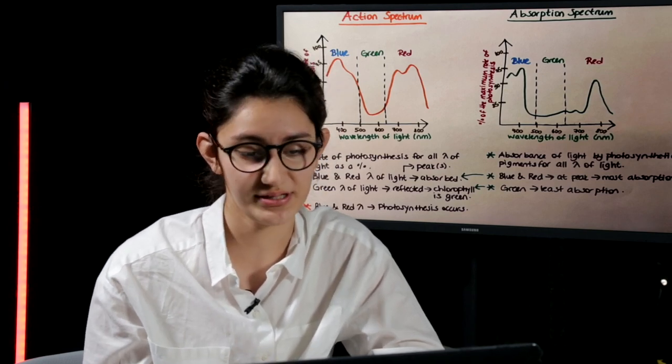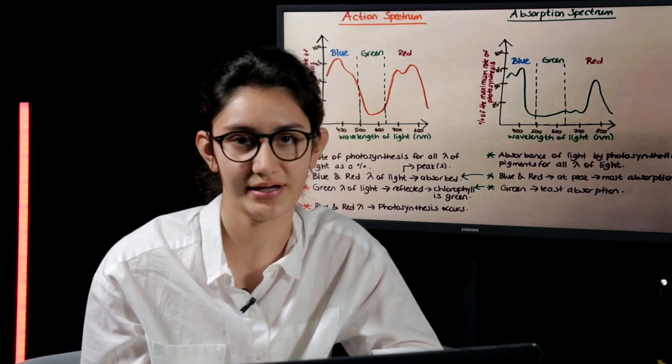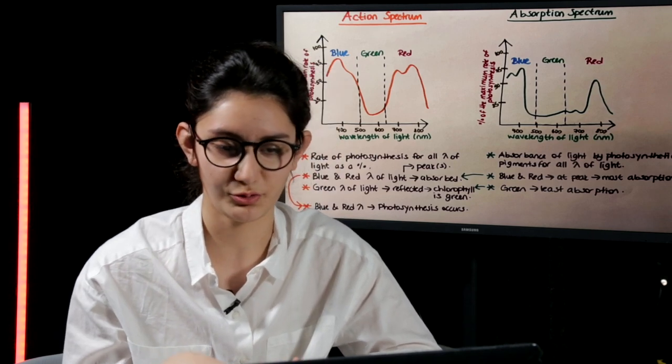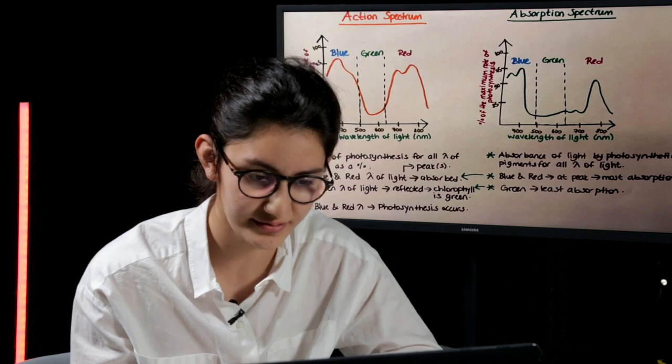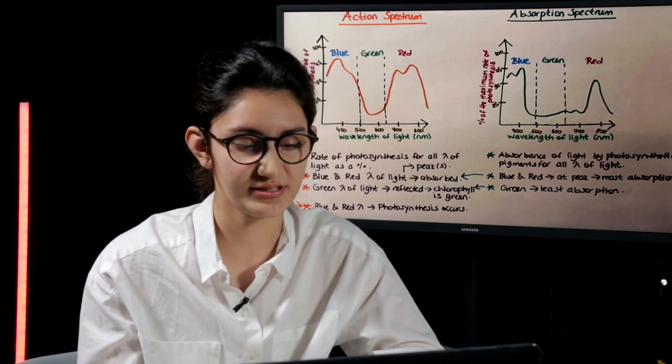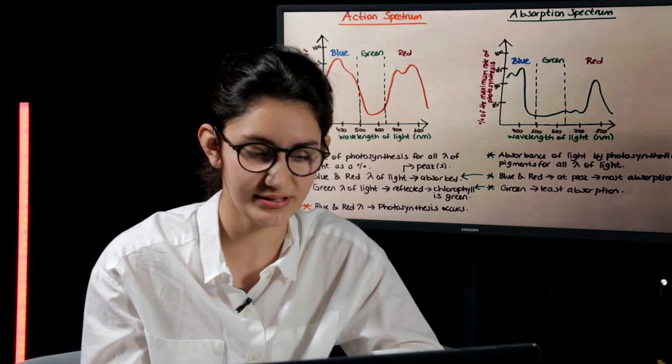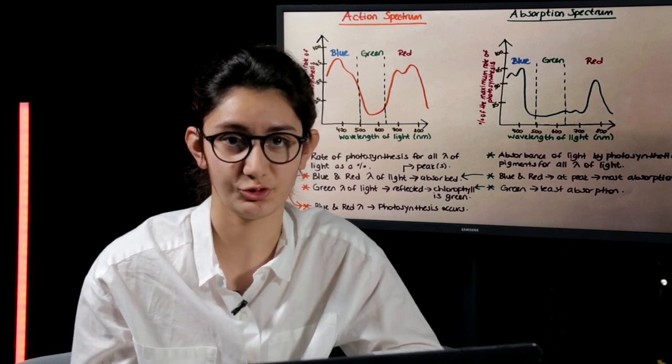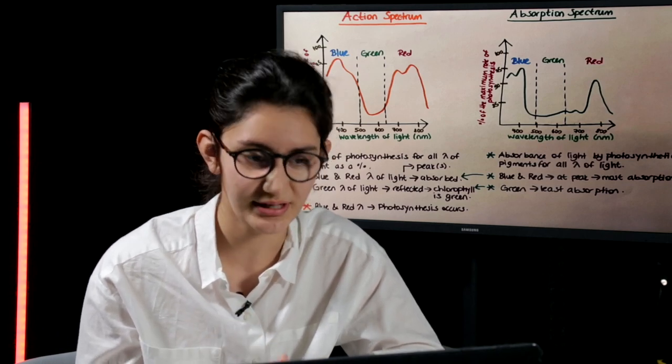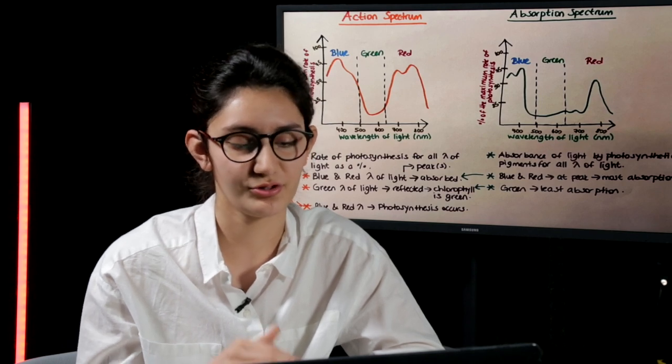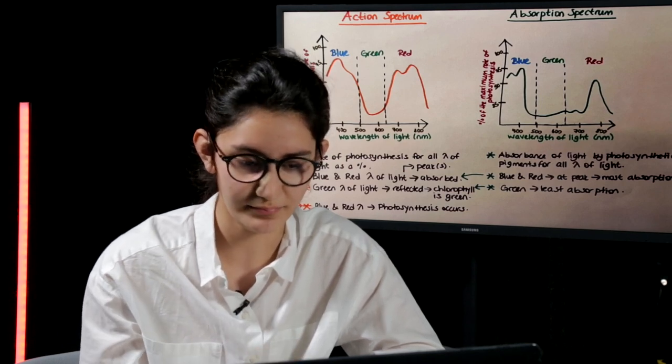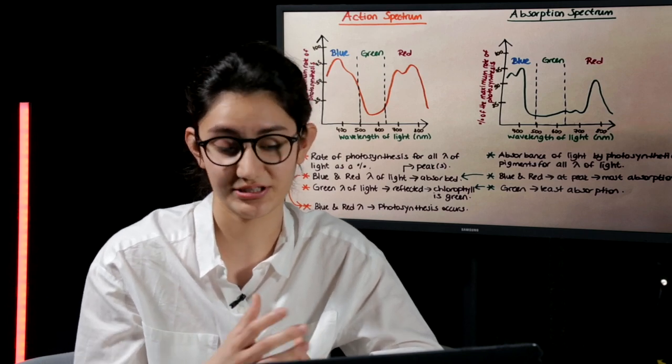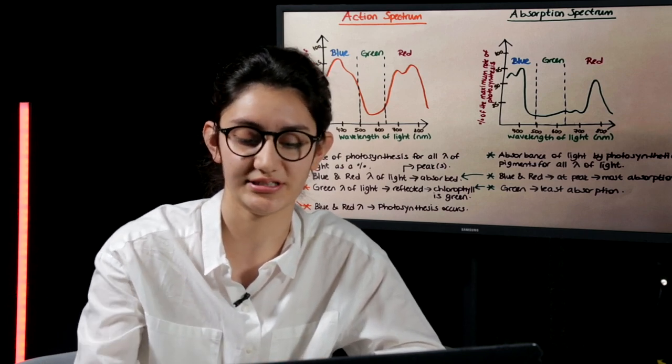This explains the action spectrum, which shows the rate of photosynthesis for all wavelengths of light as a percentage. Since the light is absorbed the most in the blue and red wavelengths, photosynthesis occurs at its highest in those sections. Whereas, since the green light is absorbed the least, photosynthesis occurs the least in that section. Green wavelength of light is reflected. That's the reason why we see chlorophyll as a green pigment.